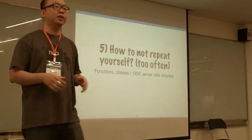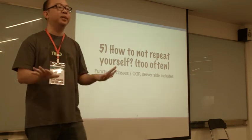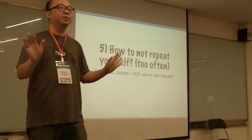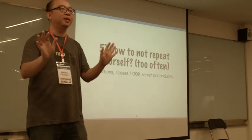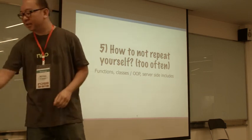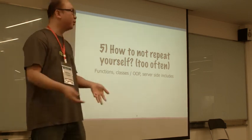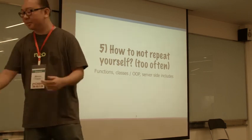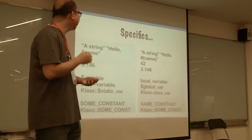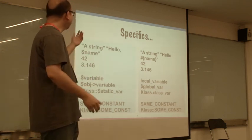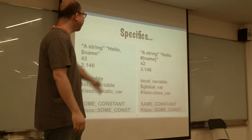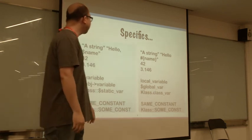So that's in a nutshell the five simple tips of how to learn any programming language. So some specifics here — on the left you'll see PHP code, and on the right you'll see Ruby code.